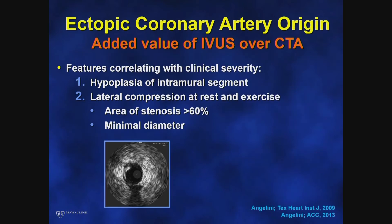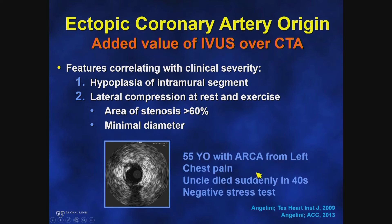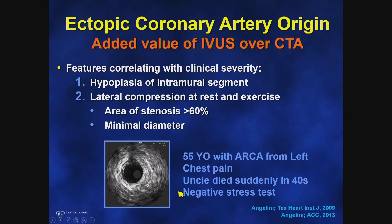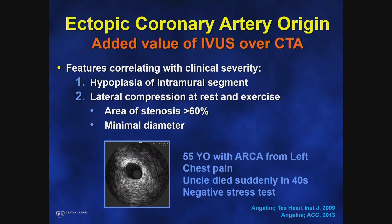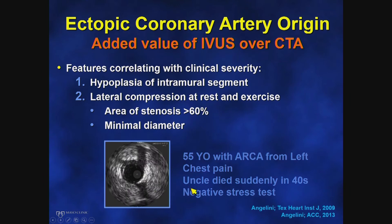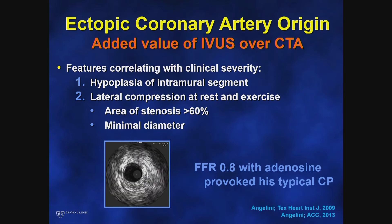Intravascular ultrasound provides added value over CT scan and angiography in some patients, because it can identify the degree of compression at rest and with exercise — or with provocation using dobutamine, atropine, and saline — looking for areas of stenosis and minimal luminal diameter. In one case, a 55-year-old with anomalous right coronary artery from the left and chest pain, whose uncle died suddenly in his 40s and who had a negative stress test, showed significant decrease in cross-sectional area on IVUS moving proximally. When given adenosine, he experienced chest pain and significant further decrease in cross-sectional area. He ultimately underwent surgery.